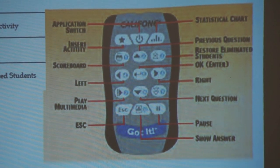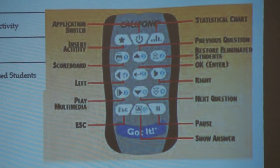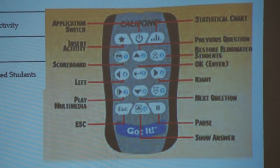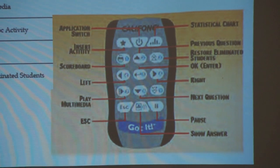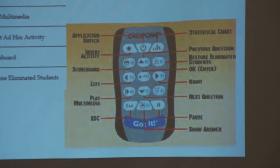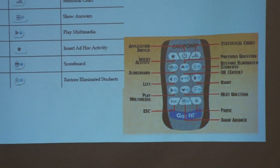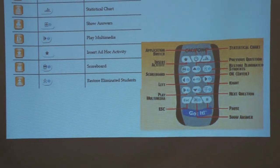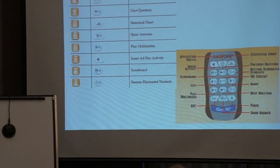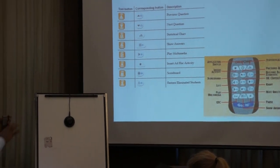Then the scoreboard shows the whole class list. Then there is restore eliminated students — in the knockout game, if some students go out and you want to put them back in, you can do that through this switch. This is the teacher remote.